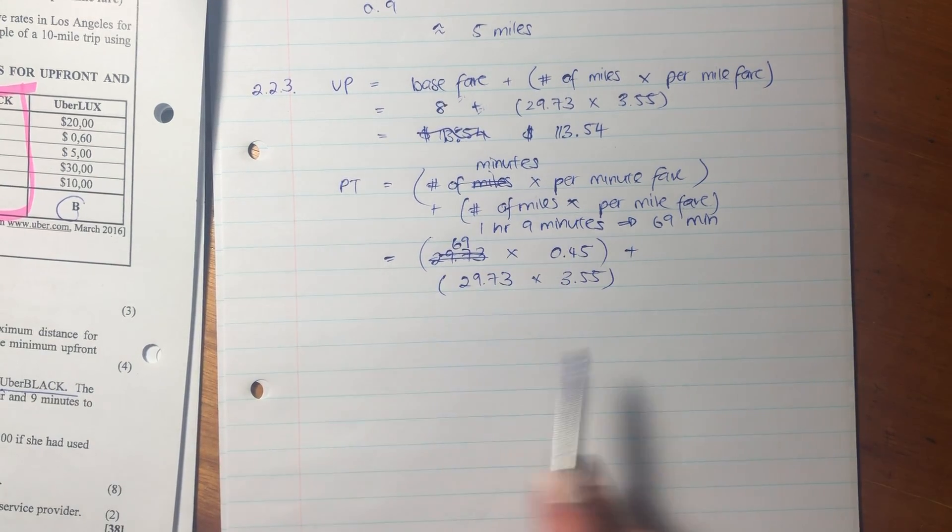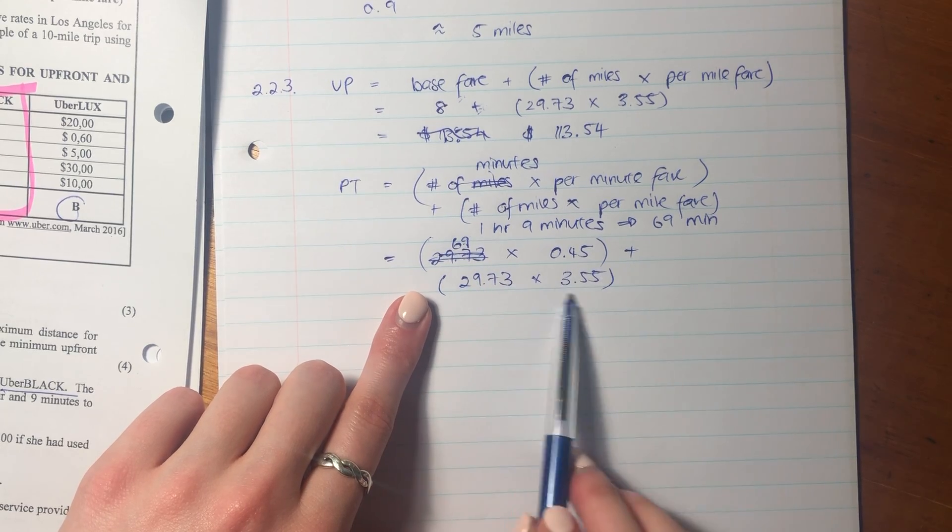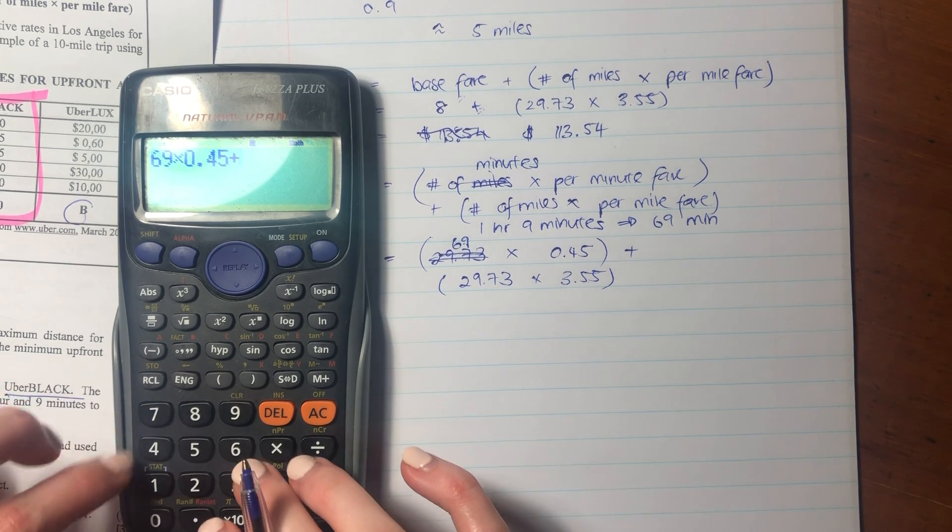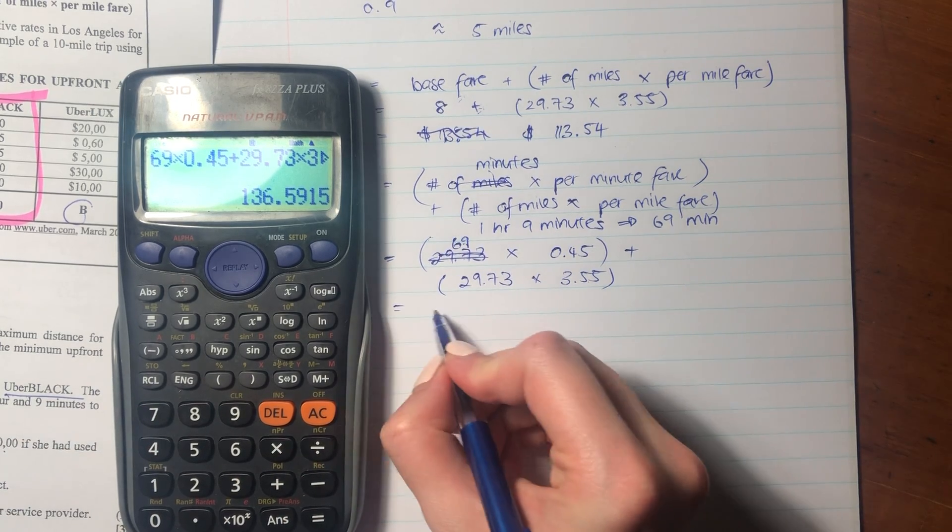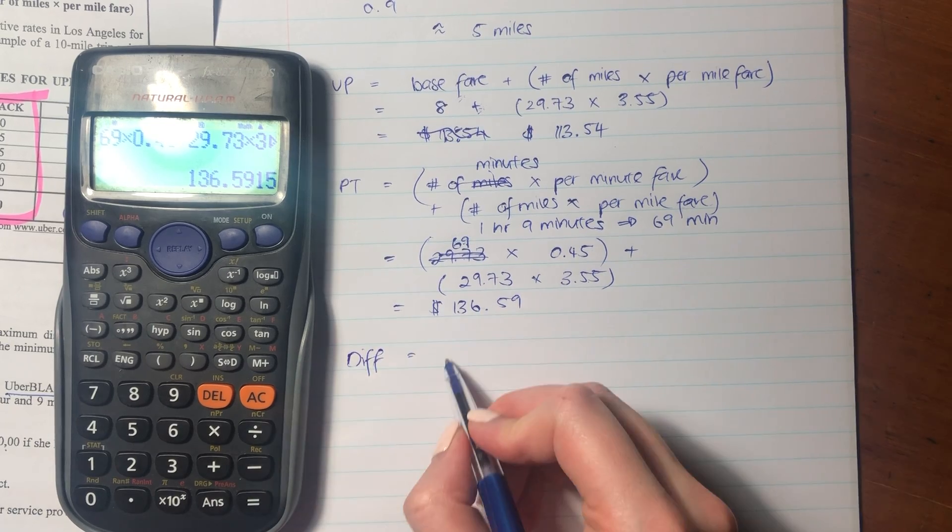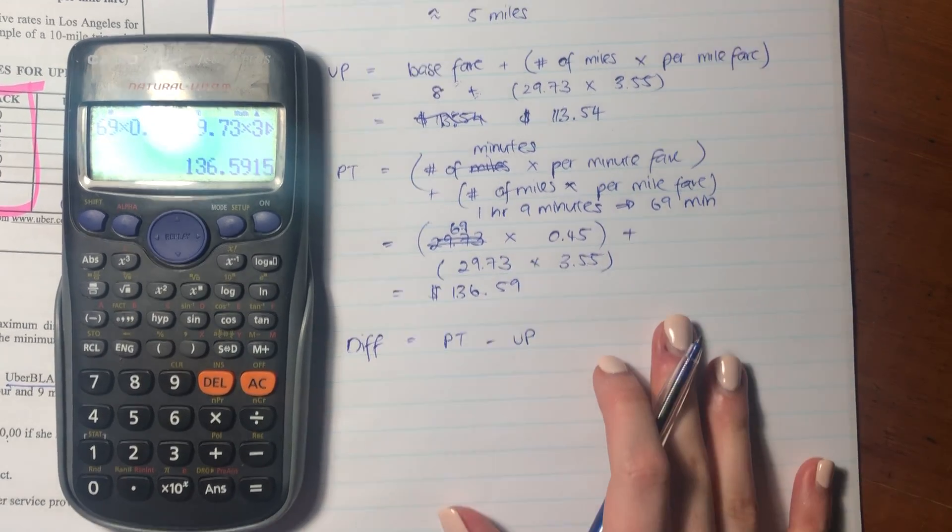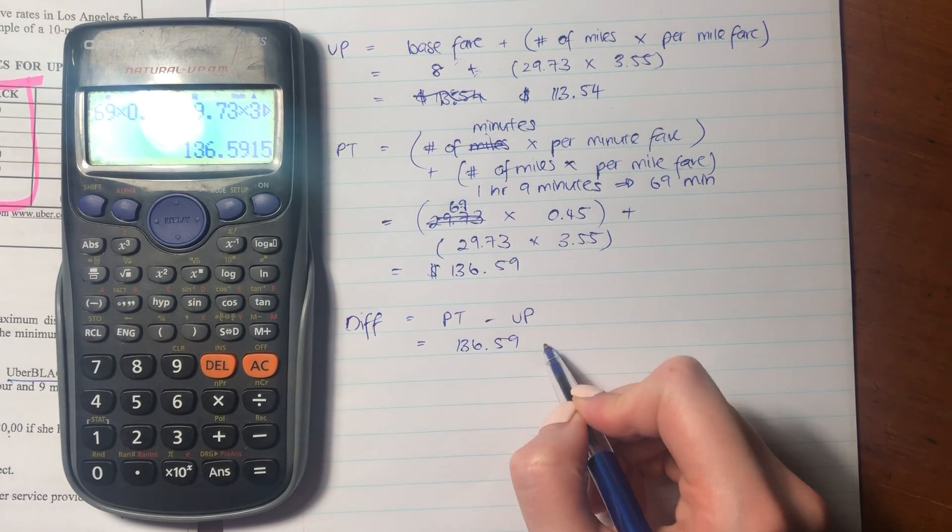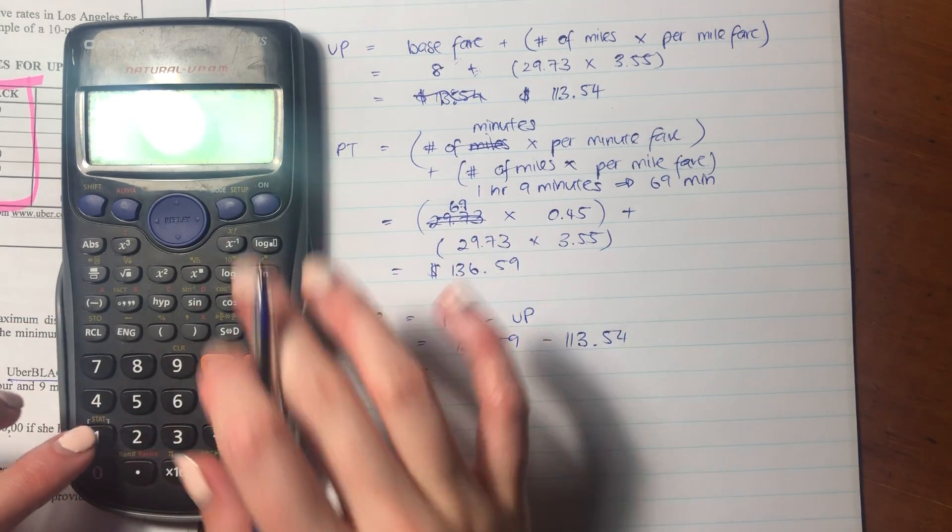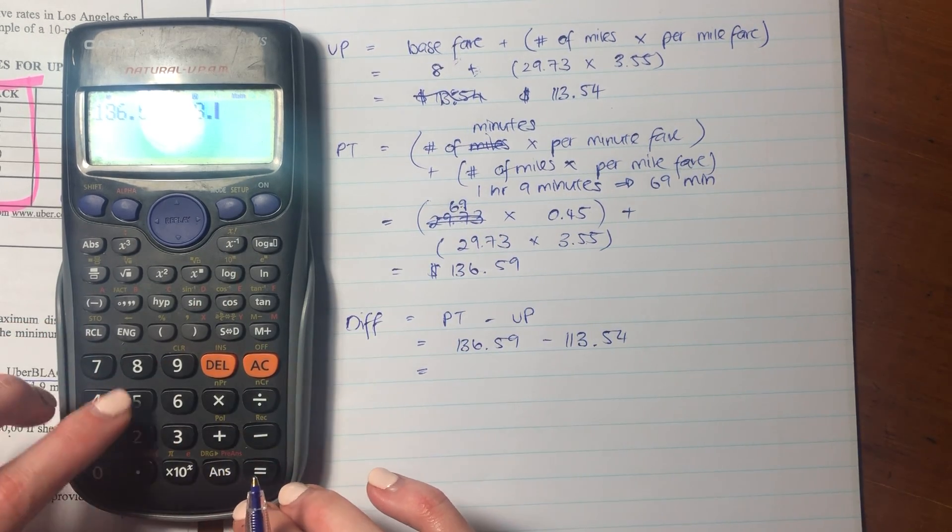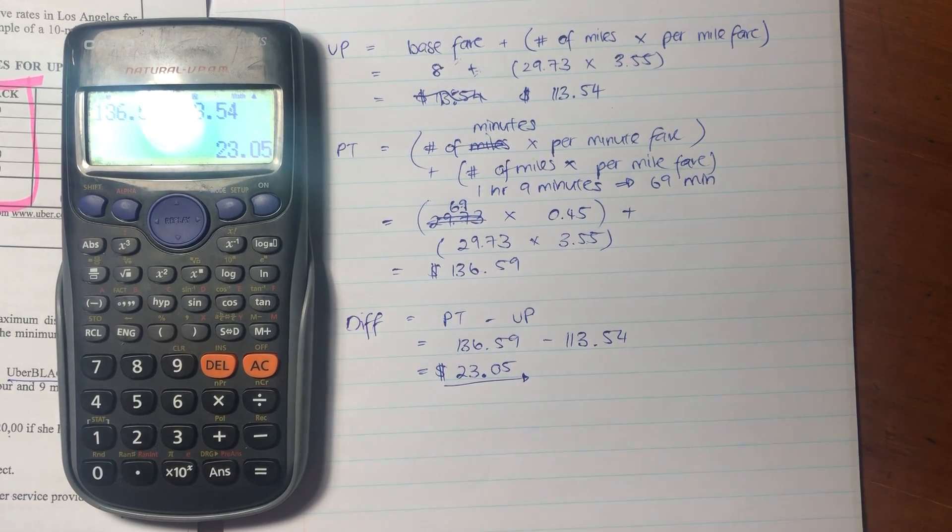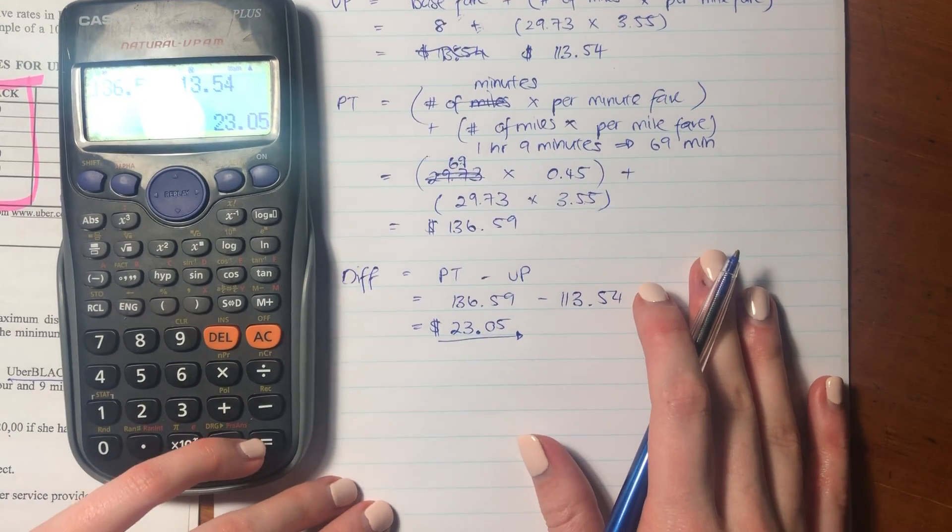Let's put that into our calculator and see what we are looking at. So it's 29.73 times 3.55 and it is 136.59. Now we need to work out the difference. So the difference is going to be my post-trip fare minus my upfront fare. So it's going to be 136.59 minus 113.54, because we want to work out the difference. That's what we're interested in. And you might be saying, why did you round off here? Because we're working with currency, and currency is one of those things that you can actually round off to two decimal places and you should. So the difference here that we have is $23.05. So that is more than $20, like Normsa said.